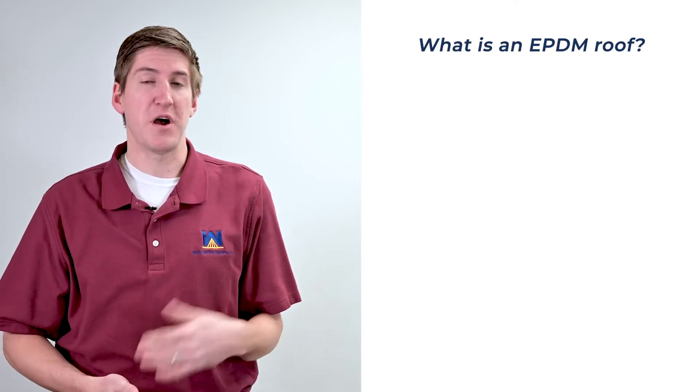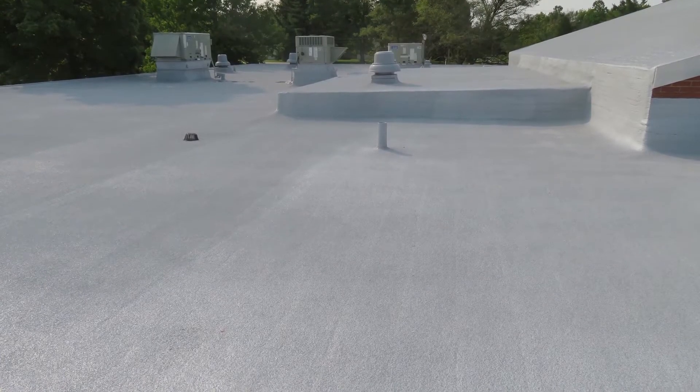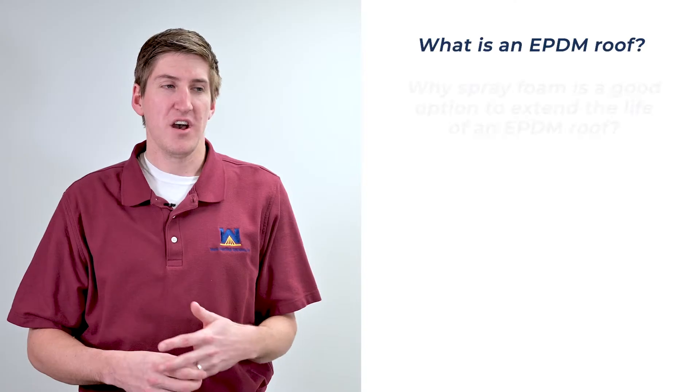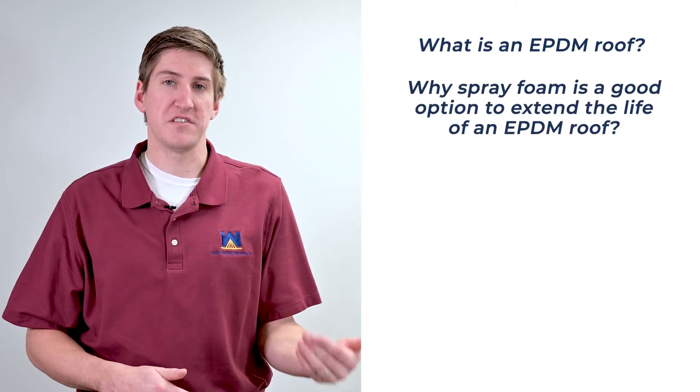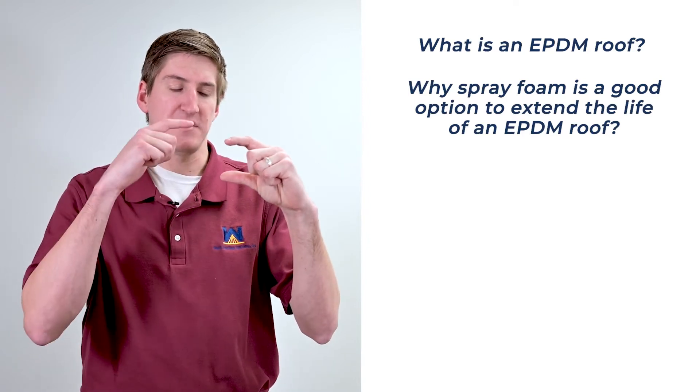People ask why is spray foam a good option to extend the life of an EPDM roof. First thing is it can go right over top so it saves you money, but also it gives you a renewable roofing system. When spray foam gets applied it goes over top, it's about an inch and a half thick, it has coating that goes over top of that and then granules on top of that as well.